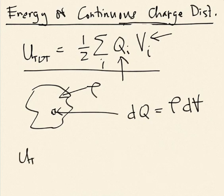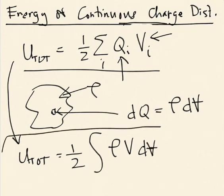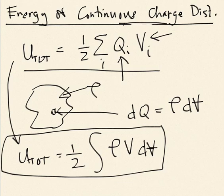And so, now my energy, I can write an expression analogous to this one where I have one half, and now I don't sum it. I do an integral over Q, which is now dQ, which is ρdV. So, I end up with ρ times the potential times dV. And so, this is the energy required to assemble this continuously spread bit of charge, this total mass of charge I've assembled here.